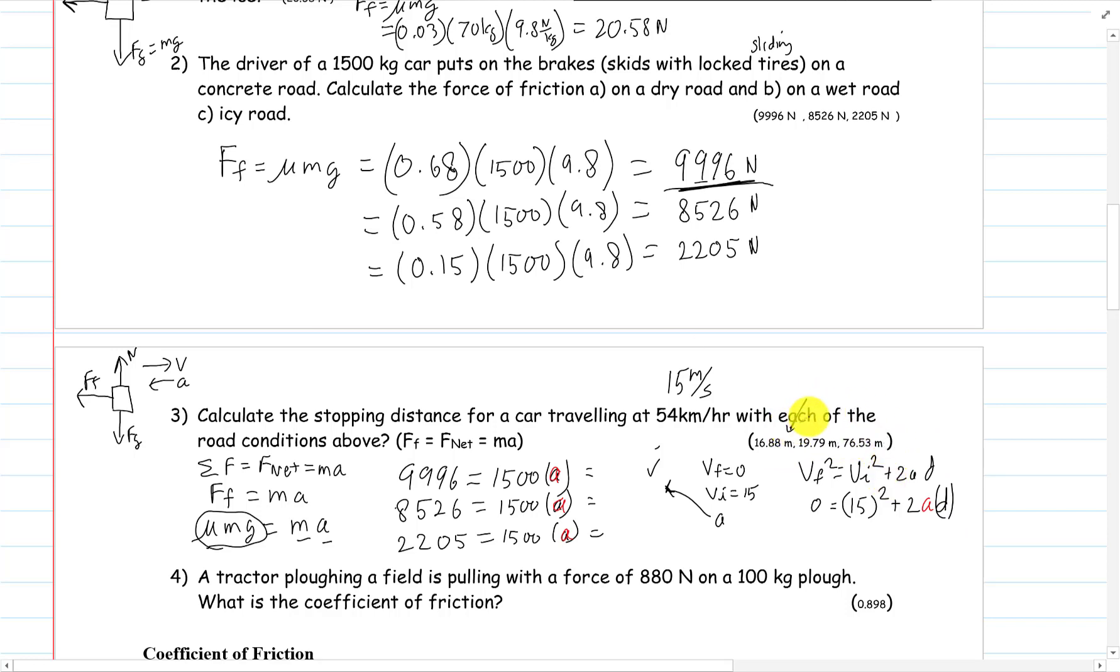On dry we'll get 16.88, wet 19.76, and on ice three quarters of a football field.